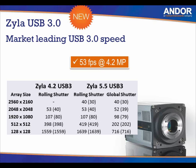Recently launched, the Zyla USB 3 comes in both 4.2 megapixel and 5.5 megapixel chips. With the 5.5 megapixel chip you get 40 frames per second full field of view; with the Zyla 4.2, a slightly smaller chip, you get 53 frames per second. As you reduce the region of interest, you can get up to 1,500 frames per second in the Zyla 4.2 and 1,600 in the Zyla 5.5. These frame rates are dramatically different from the EMCCD camera and are achieved using regions of interest, not crop mode. Differences between rolling shutter and global shutter are also visible.